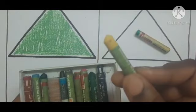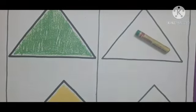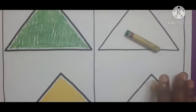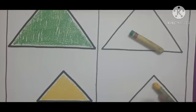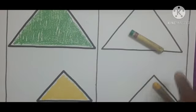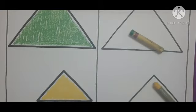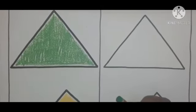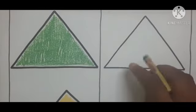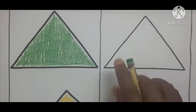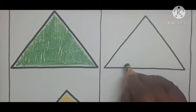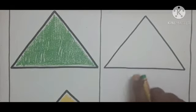For small triangle, what is the color? Yellow. You have to color the small triangle yellow. What is the shape? Triangle. Before coloring, you have to know you should not cross the lines. You have to color inside the triangle. Don't come outside, children.